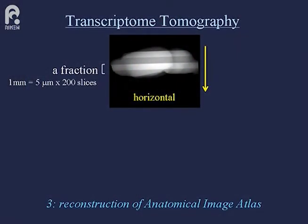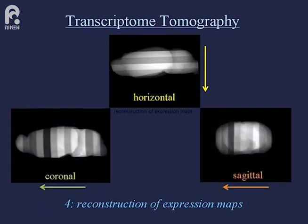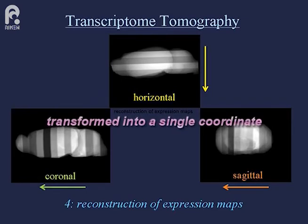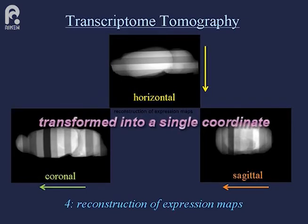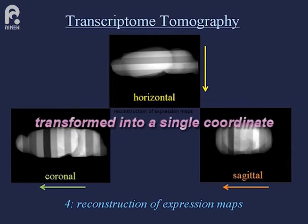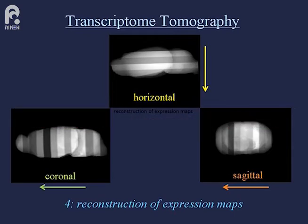For instance, in horizontal sectioning of a mouse brain, it takes about one hour to make this series of sectioning. Three series of sectioning in orthogonal planes are produced. Shapes of the three materials are transformed into a single coordinate and used for reconstruction of gene expression maps.